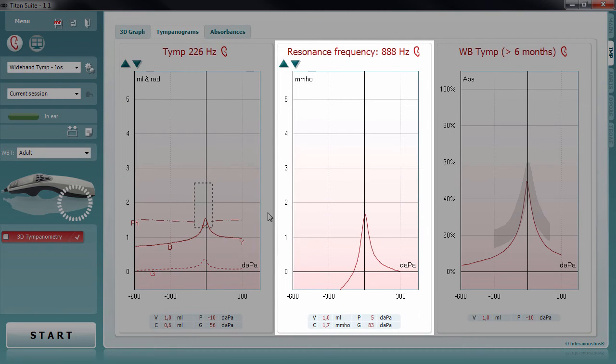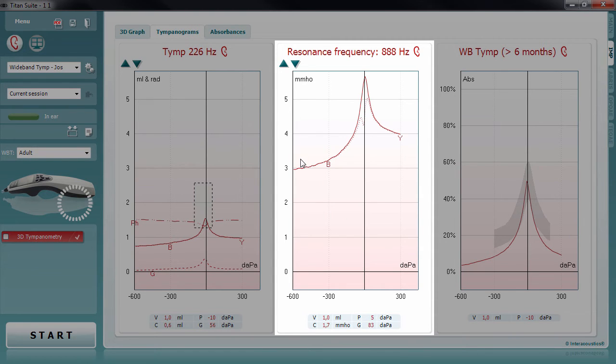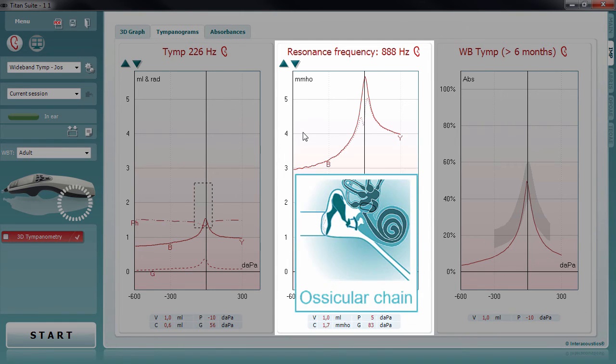The tympanogram in the middle of the screen is the tympanogram at resonance frequency. The resonance frequency tympanogram provides the clinician with information of the resonance frequency of the middle ear. The resonance frequency corresponds to the lowest frequency at which mass and stiffness contribute equally to the middle ear admittance, making the phase 0. It has been shown in literature that identifying the resonance frequency can assist in diagnosing conditions affecting the ossicular chain, for example otosclerosis or a disarticulation of the ossicular chain.